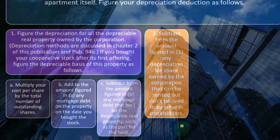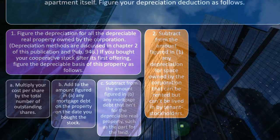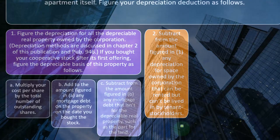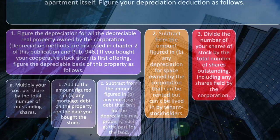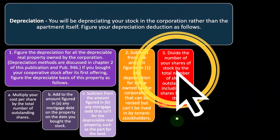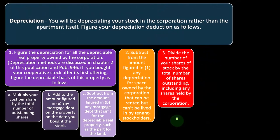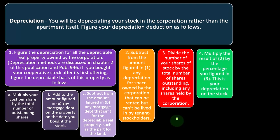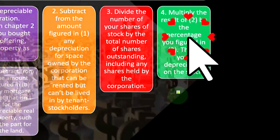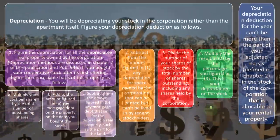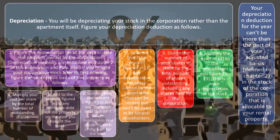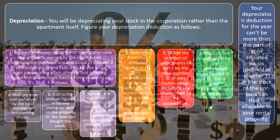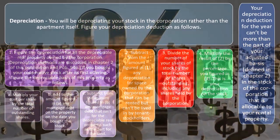Subtract from that amount any depreciation for space owned by the corporation that can be rented but cannot be lived in by tenant stockholders. Then, step three: divide your shares of stock by the total number of shares outstanding, including any shares held by the corporation — this gives your ownership percentage. Step four: multiply the result from step two by the percentage from step three to get your depreciation of the stock. Your depreciation deduction for the year cannot exceed the part of your adjusted basis in the stock applicable to your rental property.